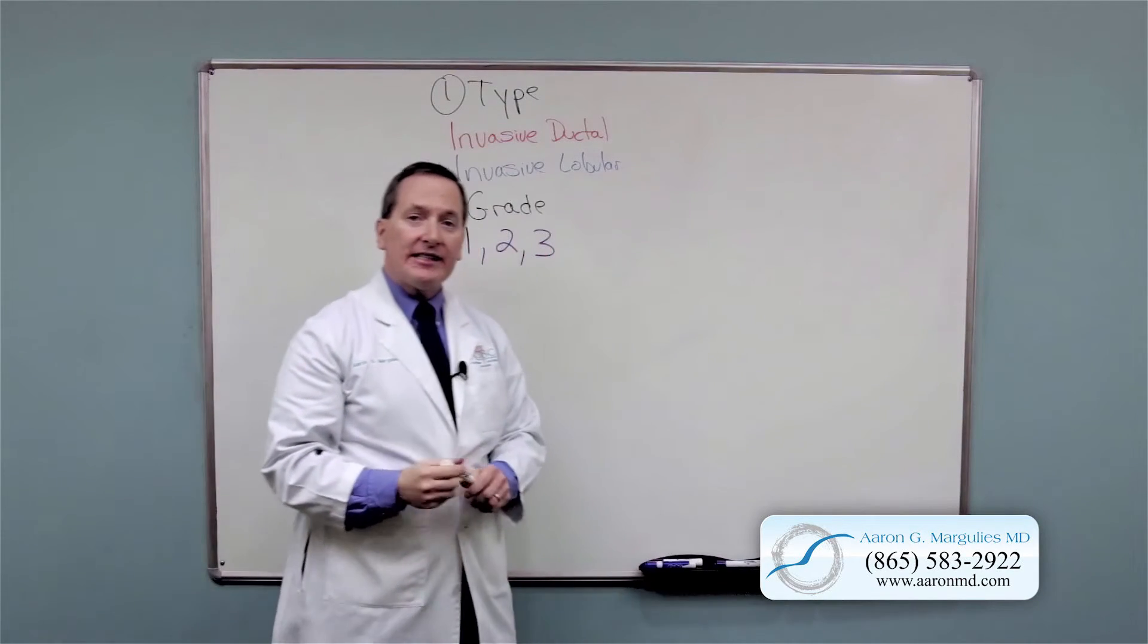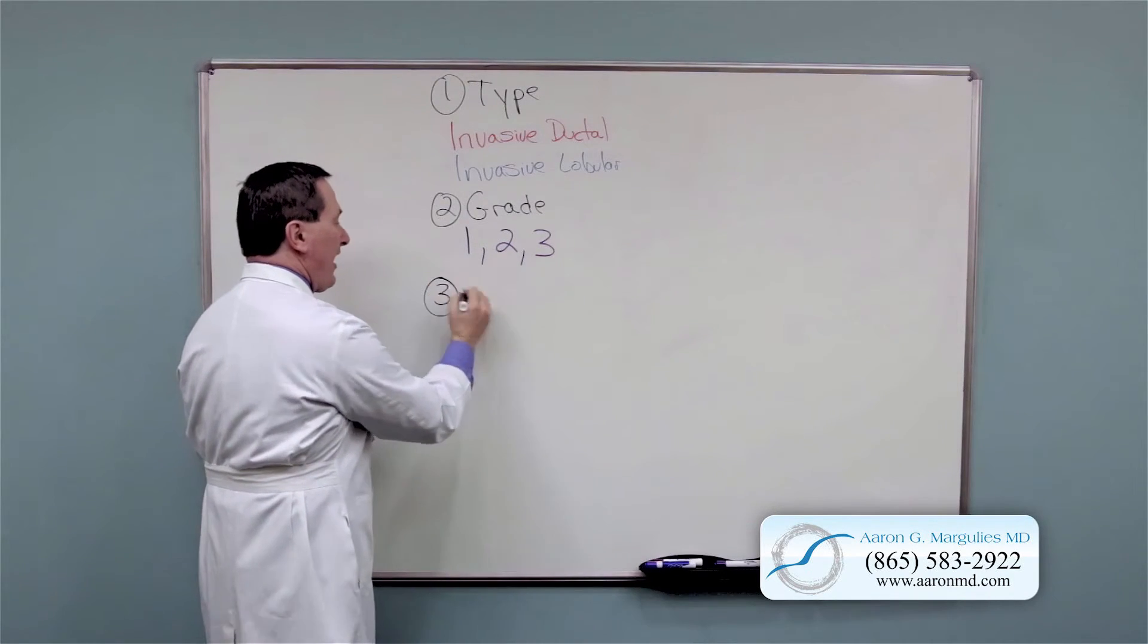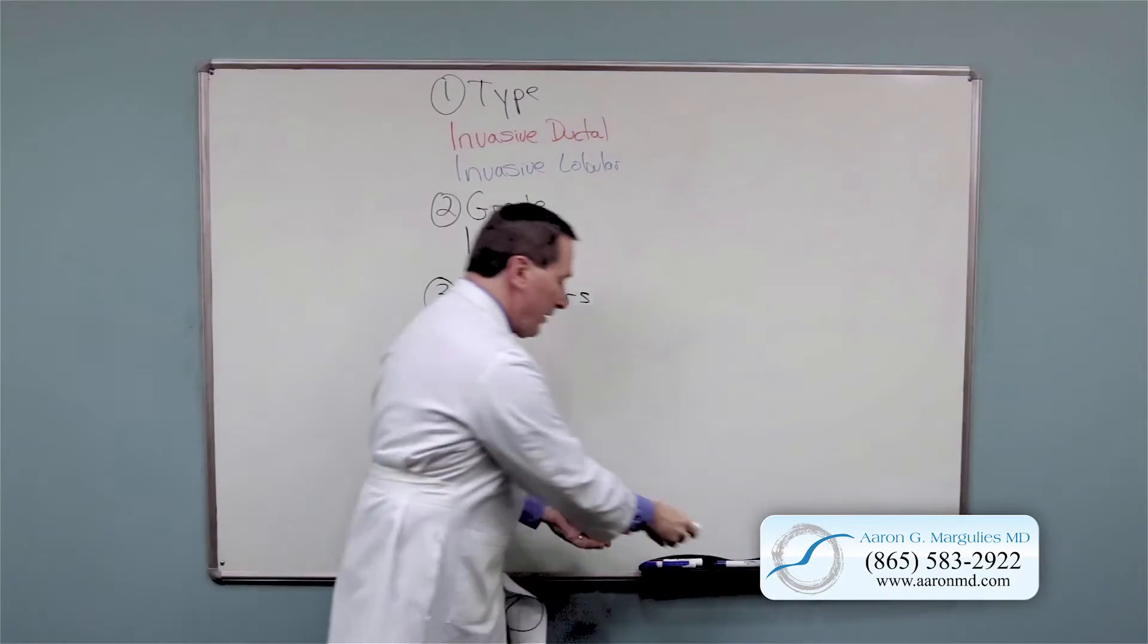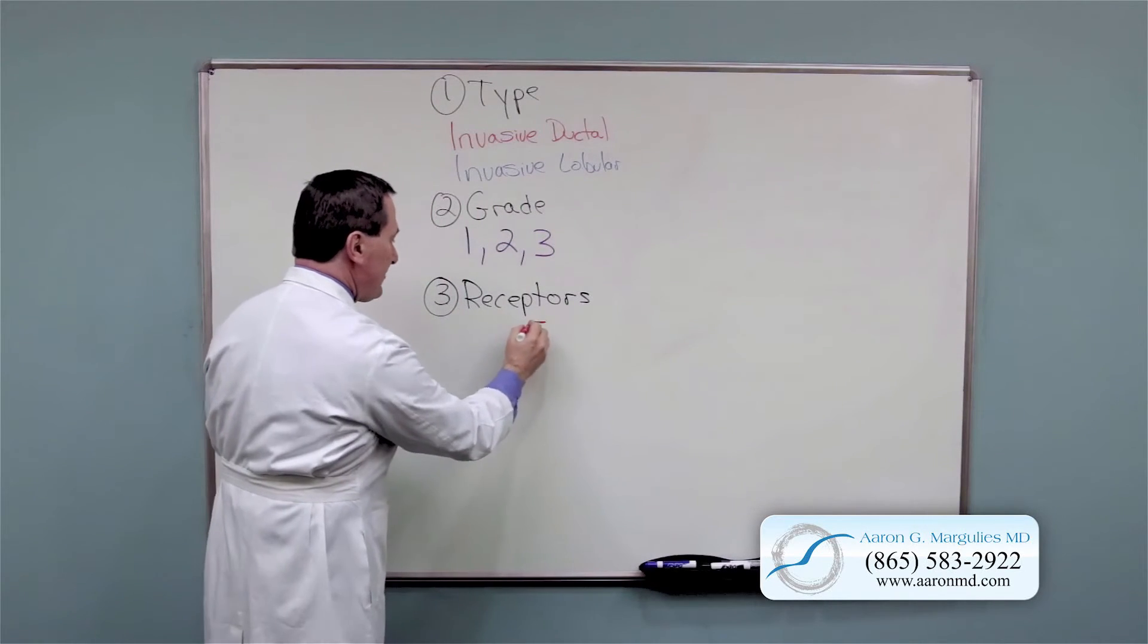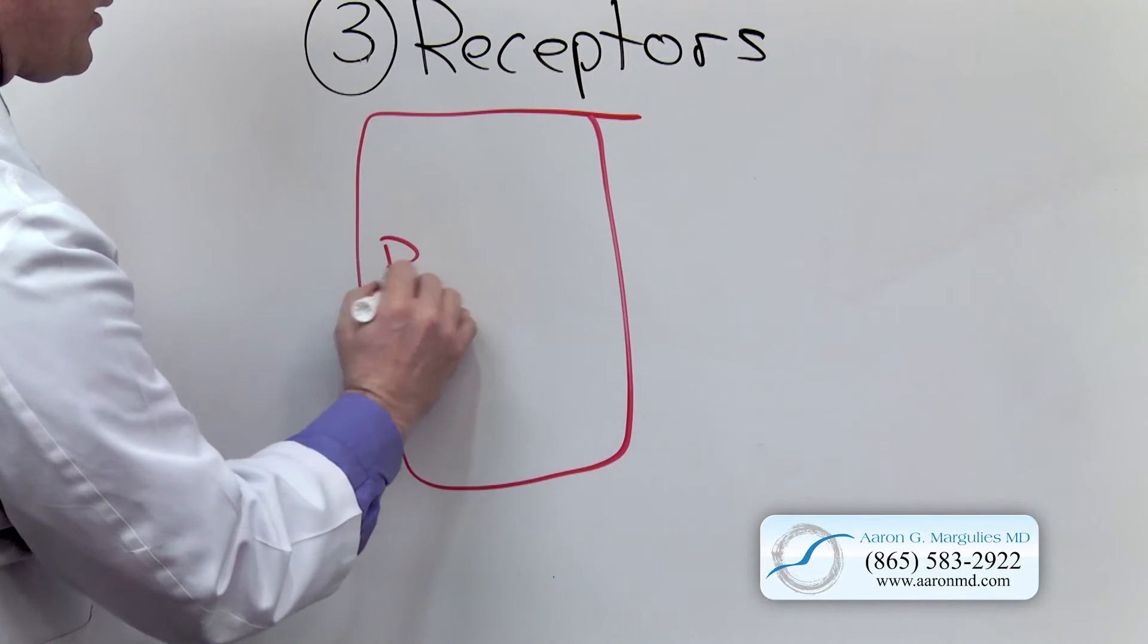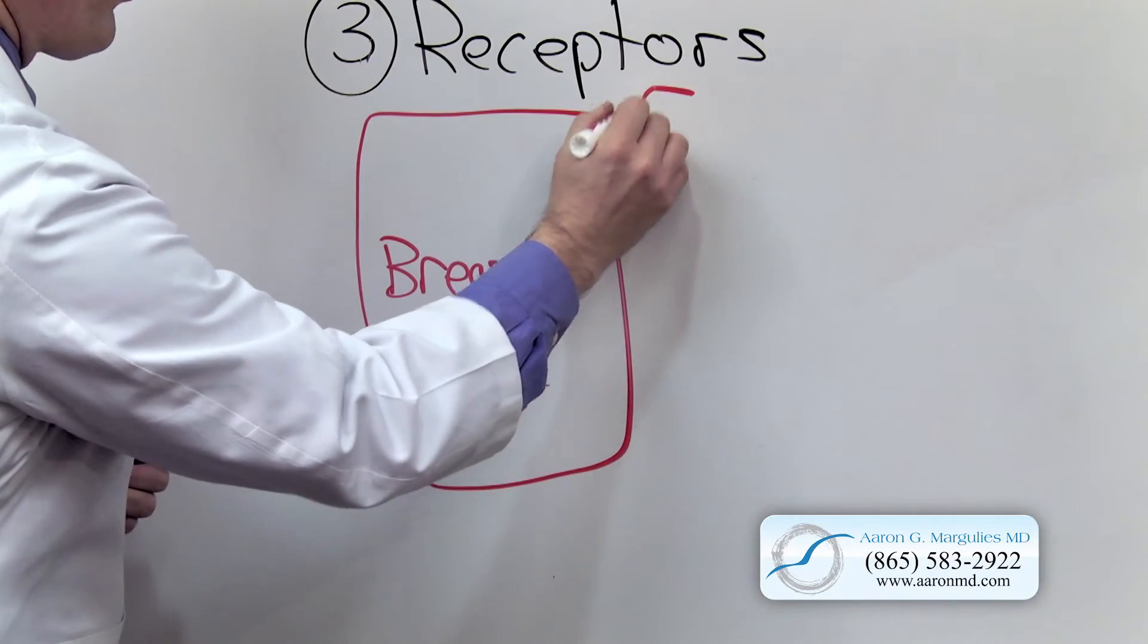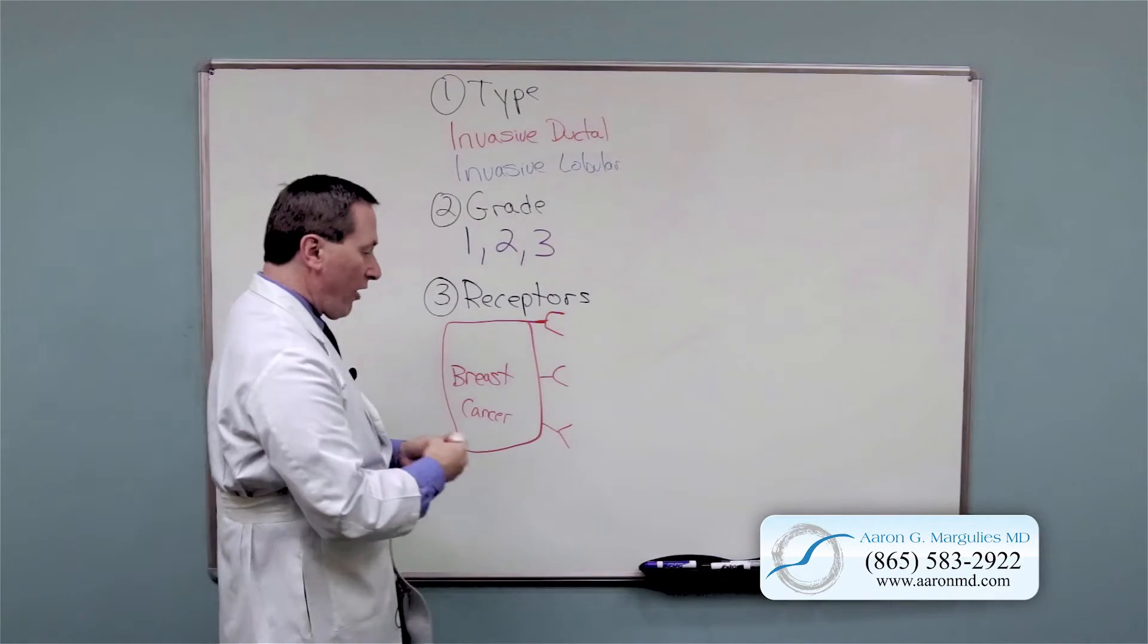And then the last thing we want to know about breast cancers are receptors. Cancers have an ability to grow by themselves, but breast cancer can be told to grow even faster if they receive certain chemical signals. So on the breast cancer cells, we're going to look for one of three, or look for all three receptors.